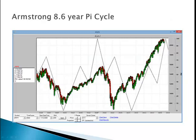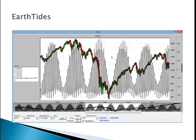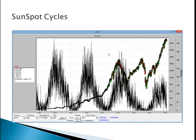In addition, there's a cycles library. For example, you have the Armstrong 8.6-year Pi cycle that can be displayed against any market. There is an earth tides feature, which is based on the gravity of the sun, earth, and moon. You can also display the sunspot cycle.